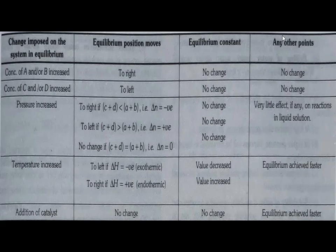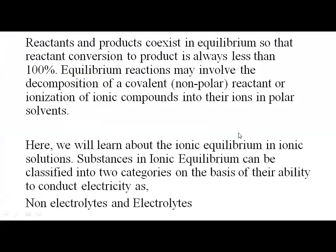Effect of addition of a catalyst: there is no change in the equilibrium position or equilibrium constant when a catalyst is added. Adding a catalyst increases the rate of both forward and backward reactions equally, so equilibrium is achieved earlier. Next concept: ionic equilibrium in solutions.